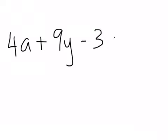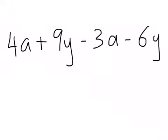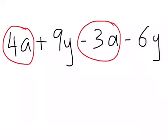Last few examples. Let's say I've got 4a + 9y - 3a - 6y. I'm going to simplify that. Let's put the like terms together. 4a and -3a. 4 - 3 gives me 1a. Now, 1a I can write as 1a or just a.